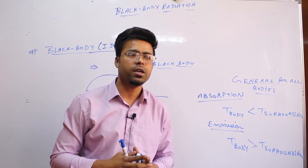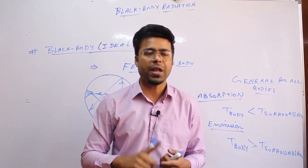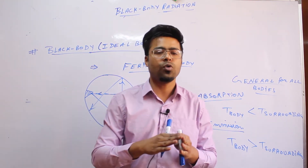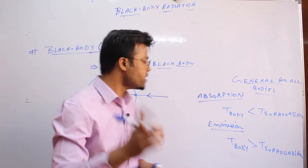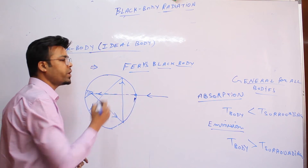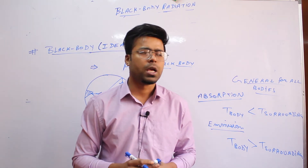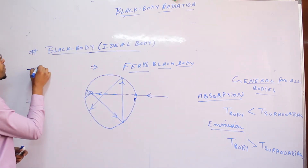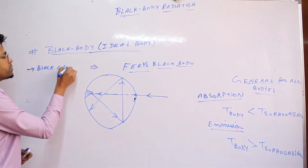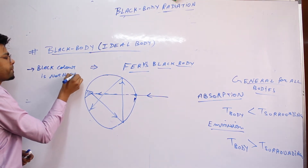So what do we think about black body? Black body should be just black color — this is a question. If it is black color, it will be black body. Black color is a good absorber, so black body need not necessarily be of black color; black color is not necessary.